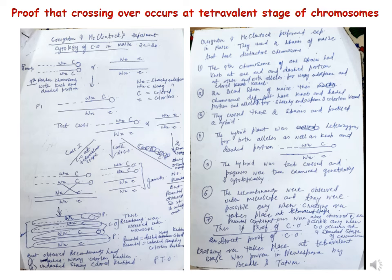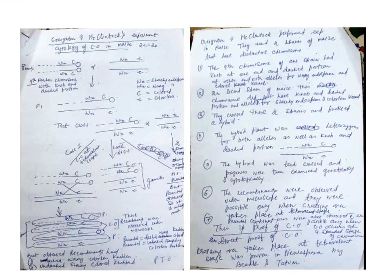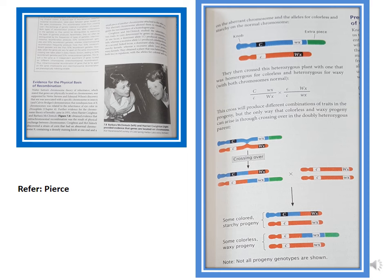The key point is that all four types of combinations are observed only when crossing over occurs at the four-stranded stage. This experiment is also described nicely in Peers, and you can read it from there as well. Thank you students — I hope you have understood the topic. Please practice by making diagrams and reading your books. See you in the next lecture.